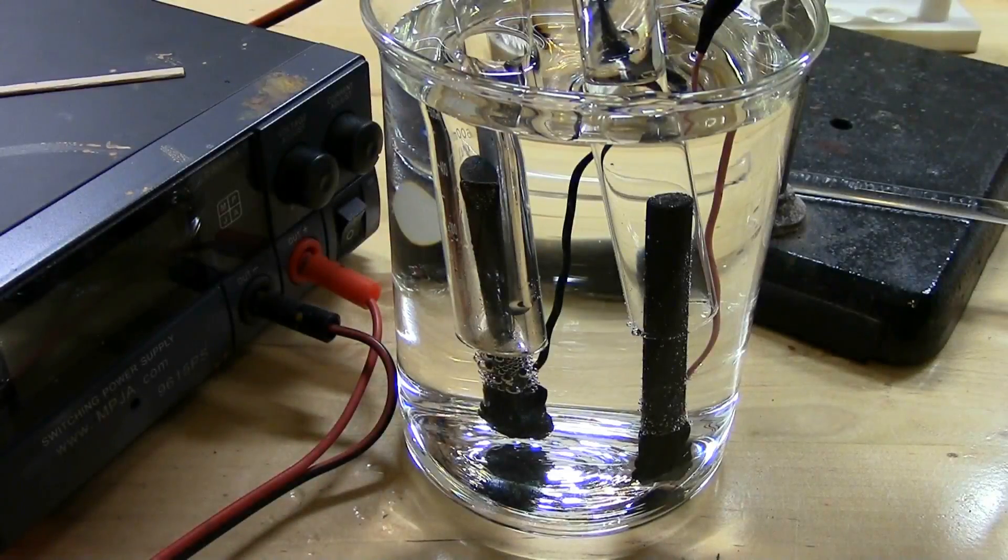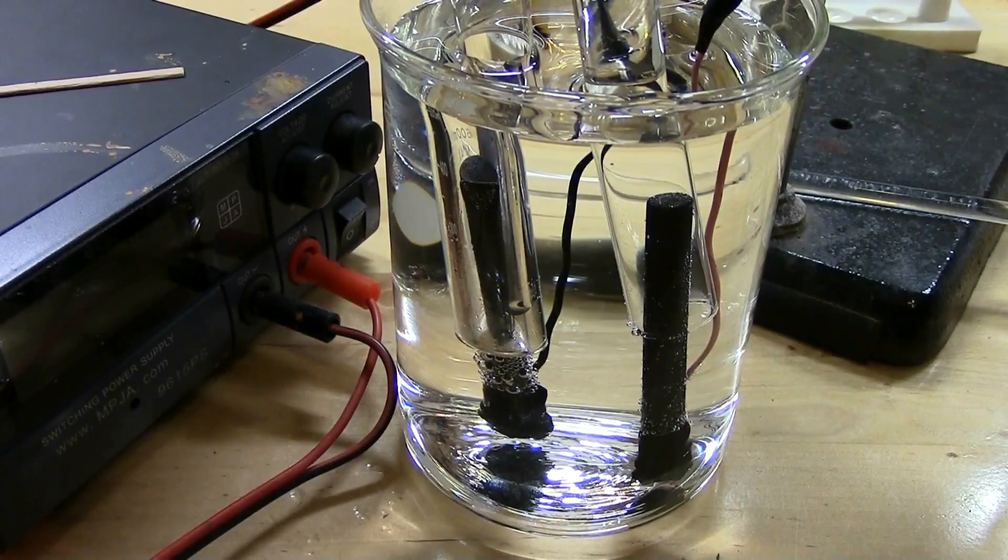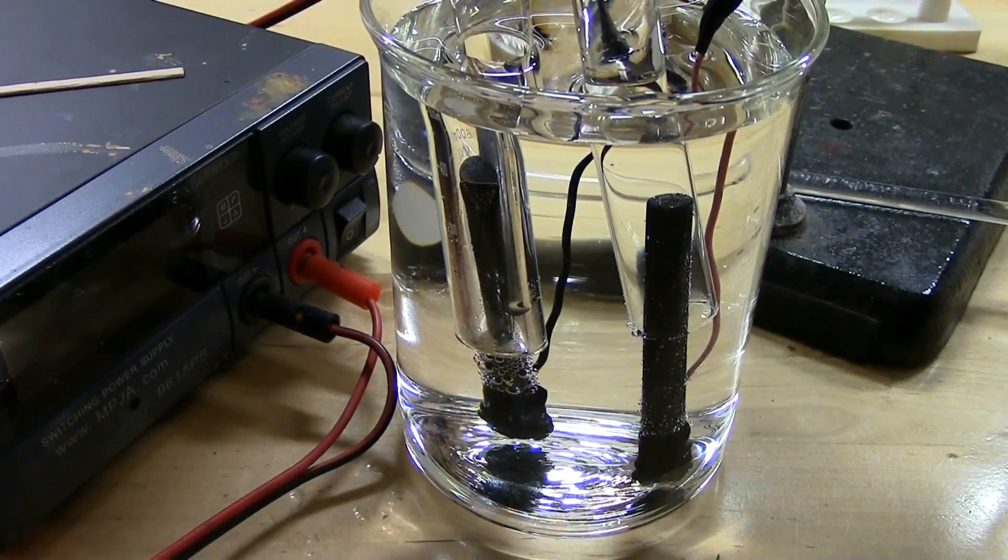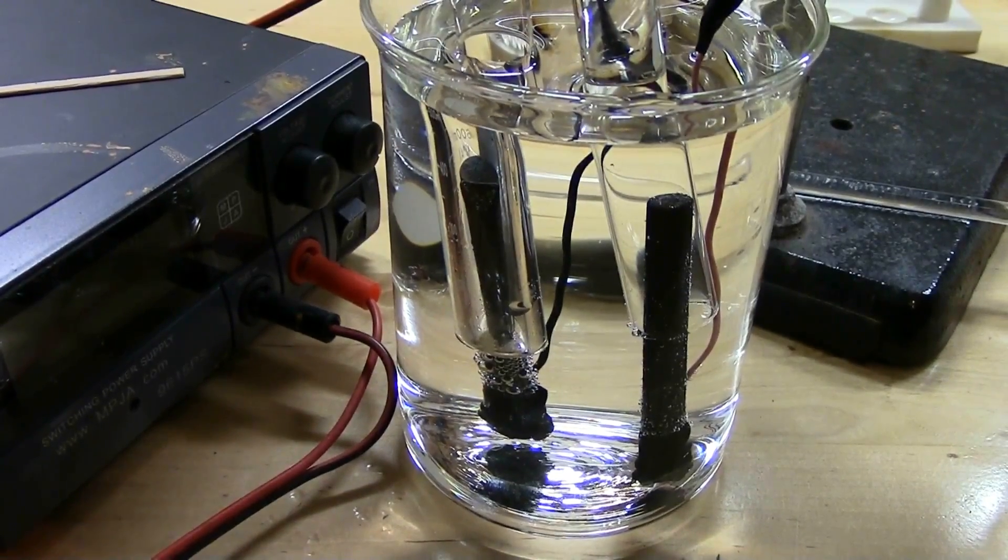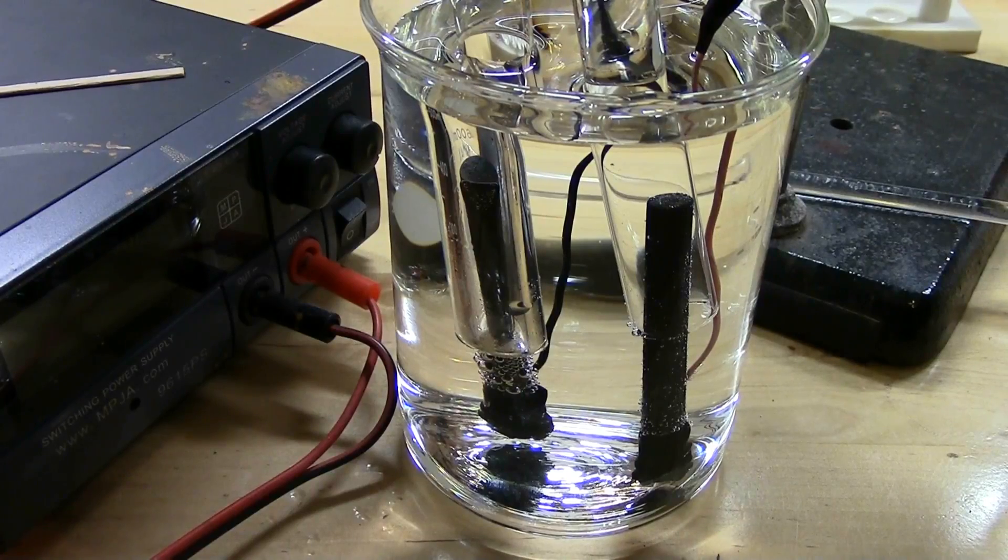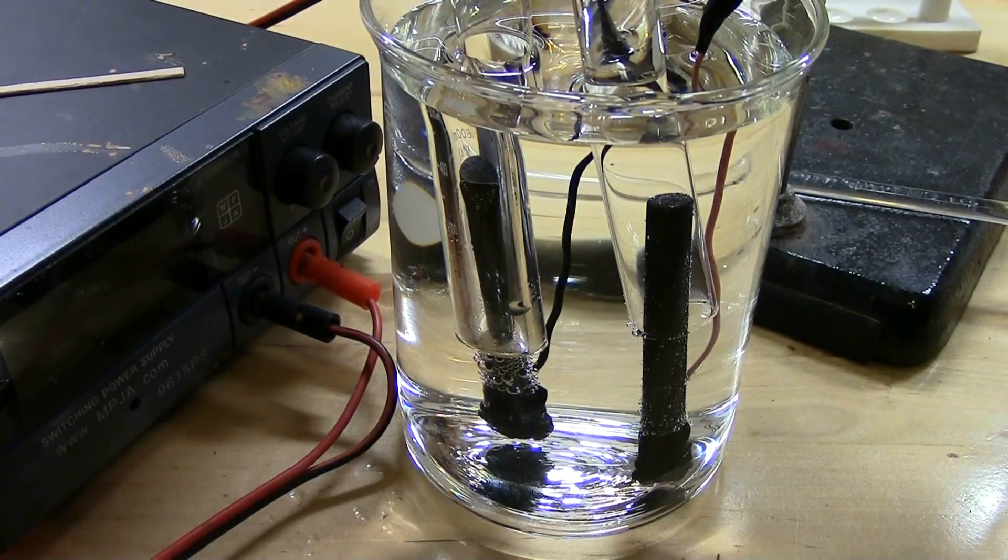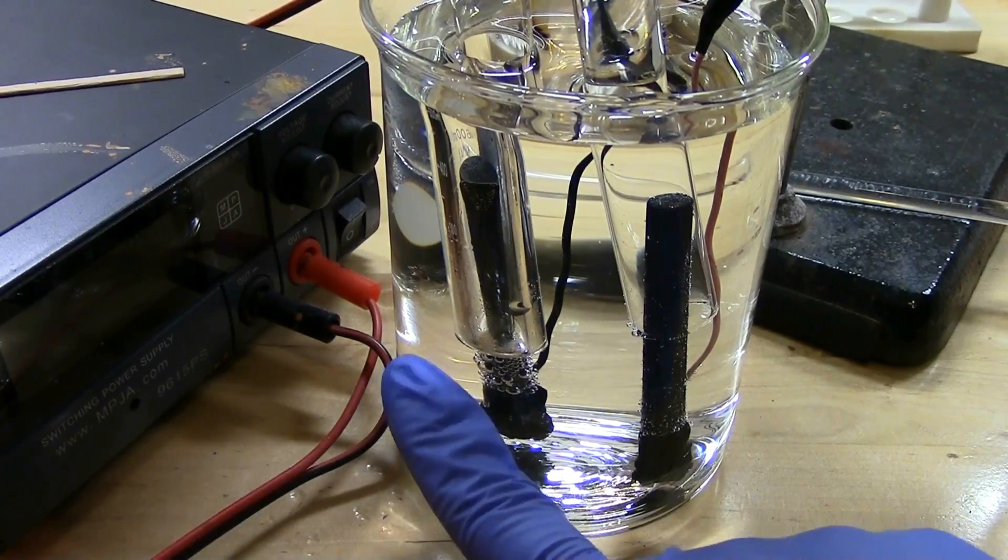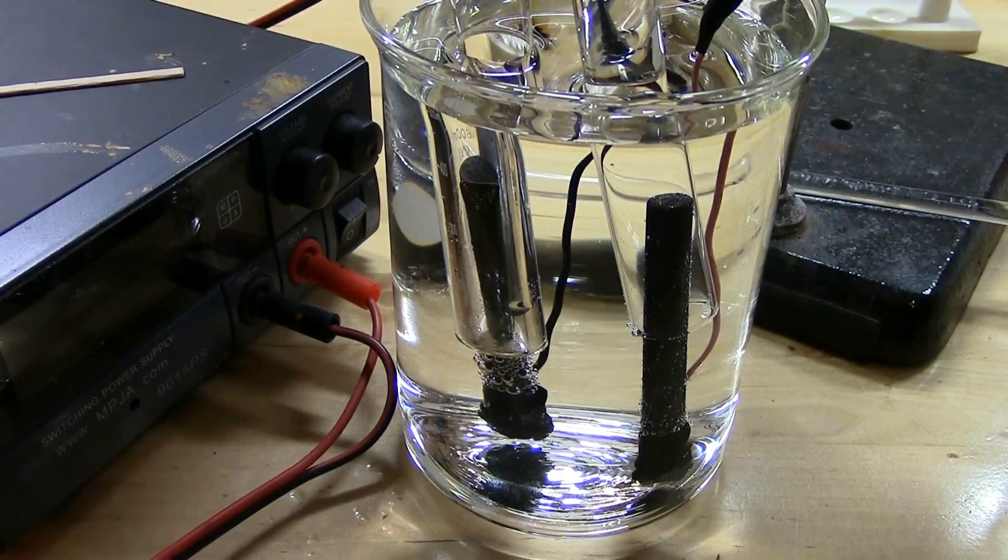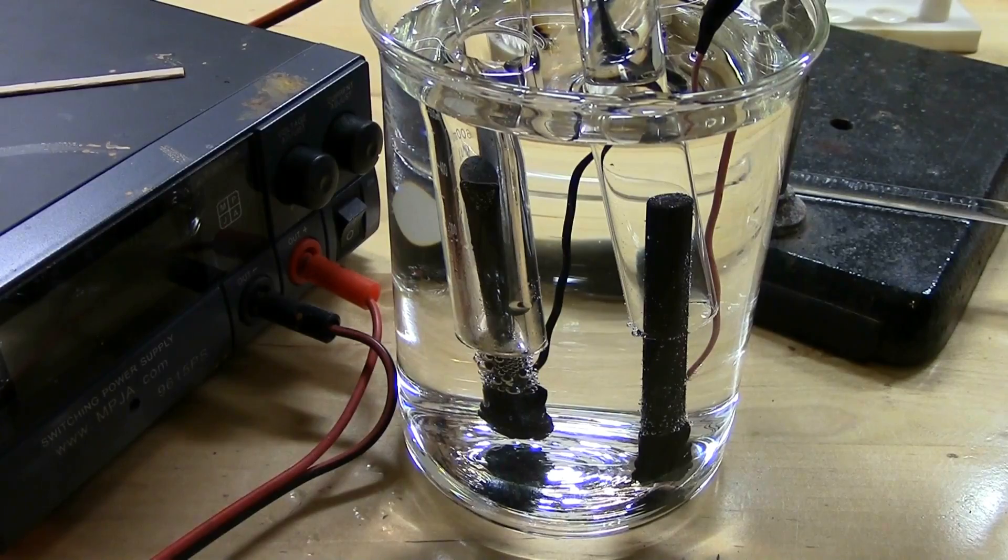The big advantage of this method is that we know the hydrogen is pure. Before, there was still air in the test tube when we were doing the zinc reaction, so there was probably a little oxygen, nitrogen, and other impurities. This, however, is completely pure hydrogen with a bit of water vapor, but that's not too bad.